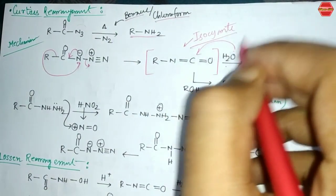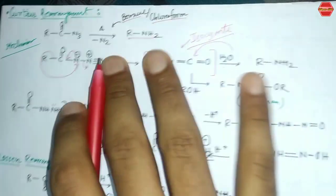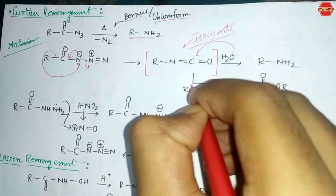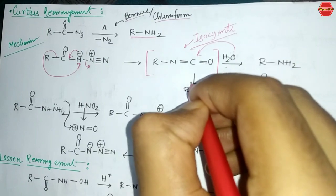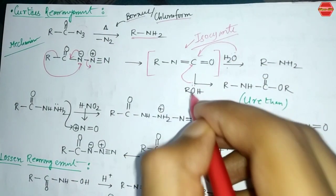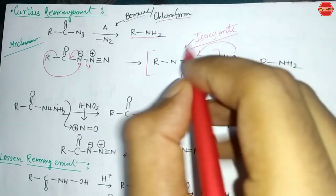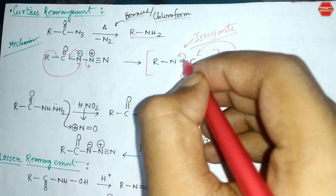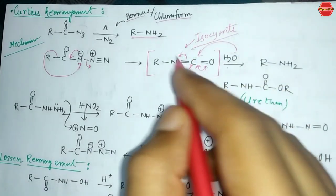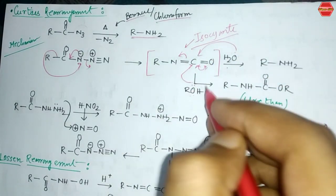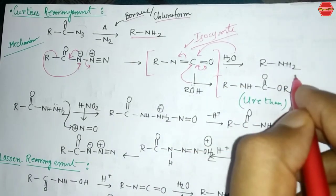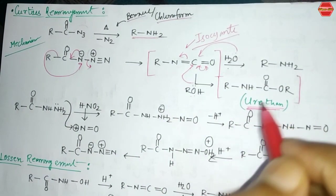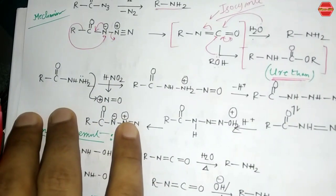After hydrolysis of the isocyanate intermediate, you get the primary amine RNH₂. If ROH is used instead of water, the oxygen lone pair attacks the C=N bond, bonds rearrange to the nitrogen side, and after protonation you get a urethane as the product.